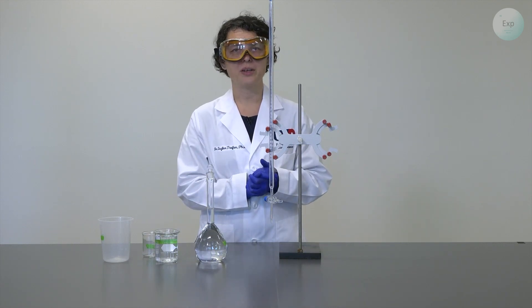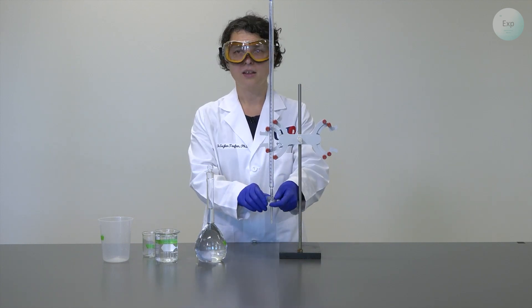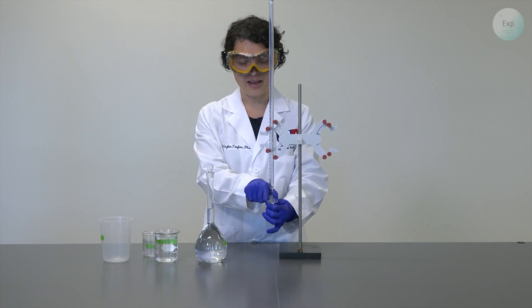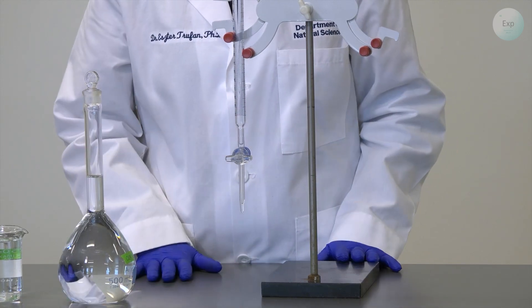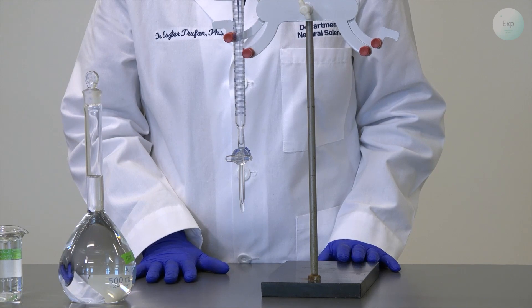So to get started, we're going to fill our burette completely with deionized water. To do that, first, we make sure that our stopcock is in the closed position. And that means that it has to be perpendicular to the orientation of the burette.